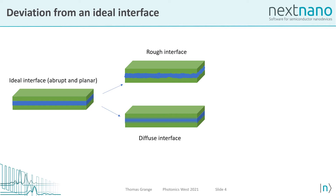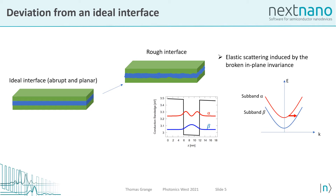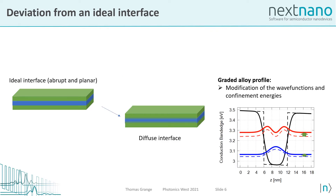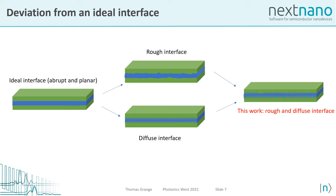On the left, we have an ideal interface, which is schematized — this interface is abrupt and planar. There are two kinds of deviations which can happen. The first is a rough interface case, where the interface is still abrupt but instead of being planar, the interface position varies with the in-plane coordinates. The second limiting case is when the interface is diffuse instead of being abrupt. In the case of a rough interface, the in-plane translational invariance is broken, and this induces elastic scattering between different sub-bands. In the case of a diffuse interface, the graded alloy profile induces modification of the wave functions and of the confinement energies. The aim of this work is to develop a general approach which captures both the rough and diffuse nature of the interfaces.